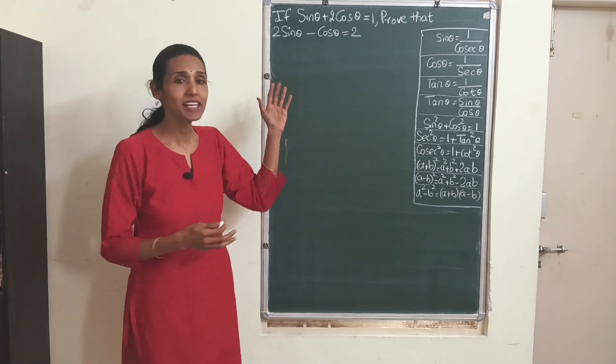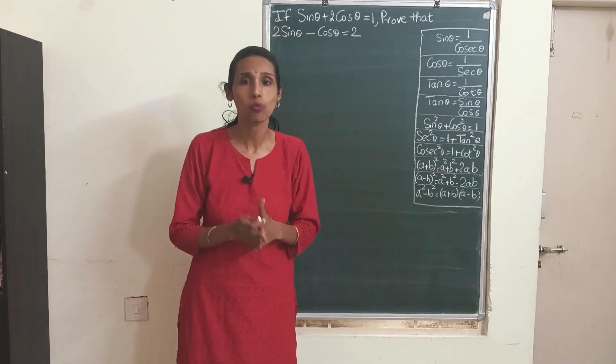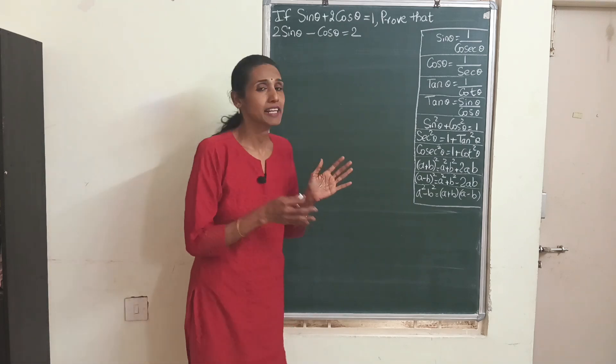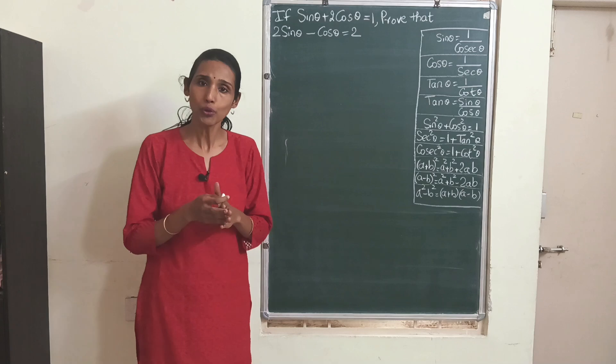The question is: if sin θ plus 2 cos θ equals 1, we have to prove that 2 sin θ minus cos θ equals 2.